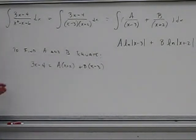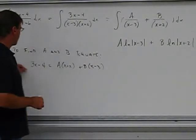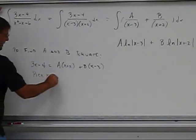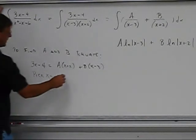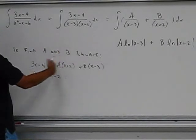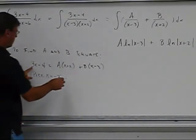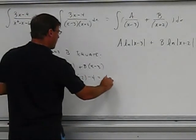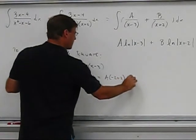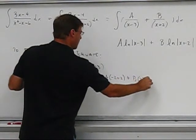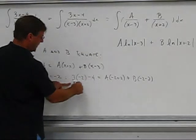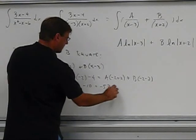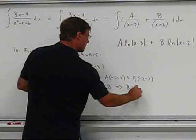Now what I'm going to do to find a and b is I'm going to pick some values for x, and I'm going to pick them very carefully. I'm going to pick x equal to negative 2, and the reason for doing that is that it will make this term 0, and that will enable me to find out what b is. So if you watch as follows, I'll have 3 times negative 2 minus 4 equals a times negative 2 plus 2 plus b times negative 2 minus 3, and that gives me, here this is negative 10, here's 0, and I get negative 5b, so that tells me that b is equal to 2.